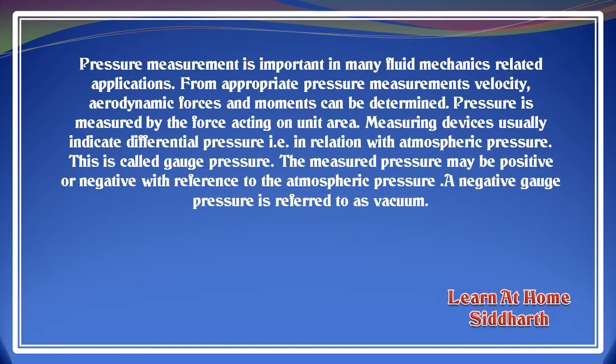Every time we measure pressure, it is mostly gauge pressure. In gauge pressure, we are measuring the pressure of the instrument directly and the atmospheric pressure is subtracted from that. If we add the atmospheric pressure to gauge pressure, we can get the absolute pressure value.